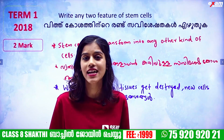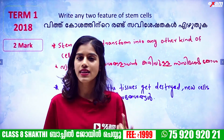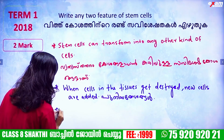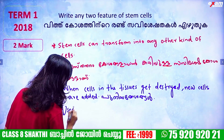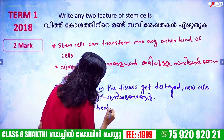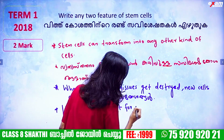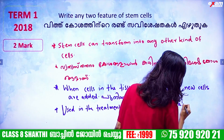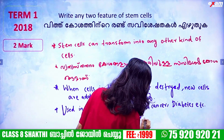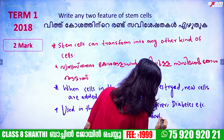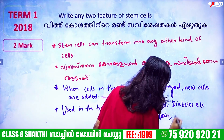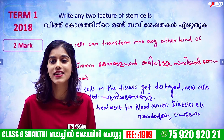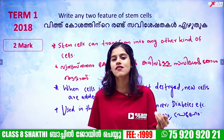Stem cells can be used in research and treatment for blood cancer, Parkinson's disease, and diabetes. So stem cells can be used in the treatment for blood cancer, diabetes, and other conditions. Stem cells are very important.